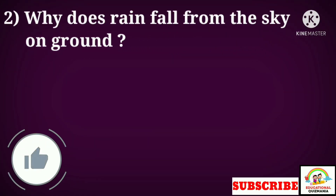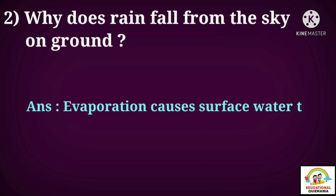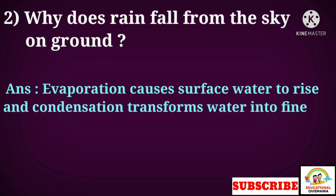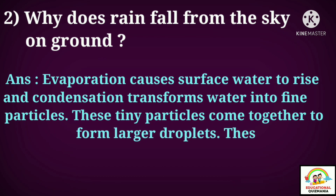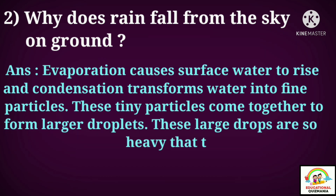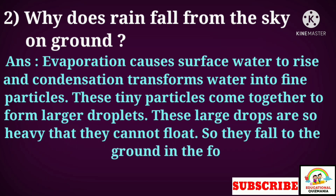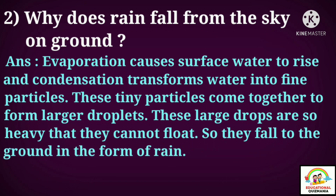Question: Why does rain fall from the sky to the ground? Answer: Evaporation causes surface water to rise, and condensation transforms water into fine particles. These tiny particles come together to form larger droplets. These large drops are so heavy that they cannot float, so they fall to the ground in the form of rain.